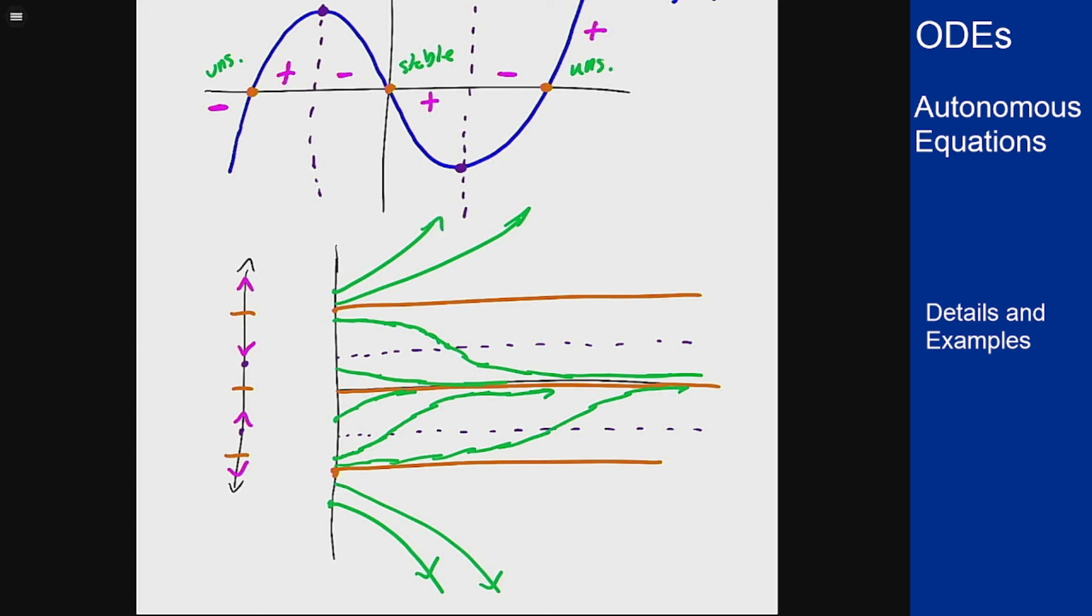So the sign of f tells us whether increasing or decreasing. The derivative of f tells us about the concavity function, where it's going to be concave up or concave down, and that gives us a sketch of curves like this for our solutions to these equations.